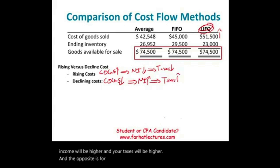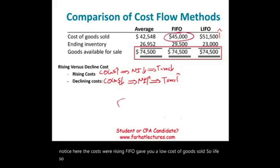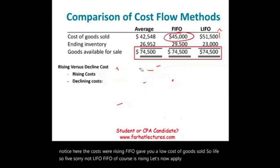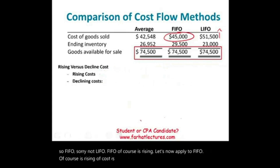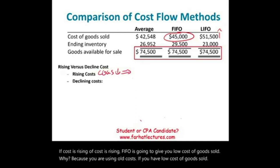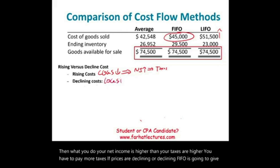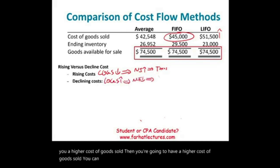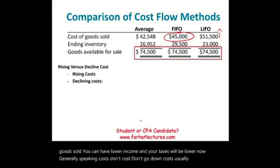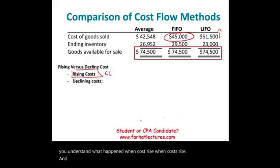The opposite applies to FIFO. When costs are rising and you use FIFO, you use old lower costs — so cost of goods sold is low, net income is higher, and taxes are higher. If prices are declining under FIFO, cost of goods sold is higher, income is lower, and taxes are lower. Generally speaking, costs don't go down — costs usually rise. So when costs rise and you use LIFO, cost of goods sold is higher, net income is lower, and taxes are lower. The average method will give you figures in between FIFO and LIFO.